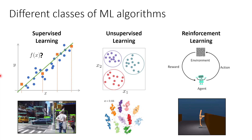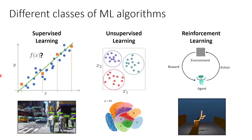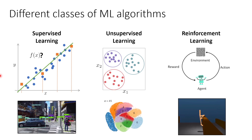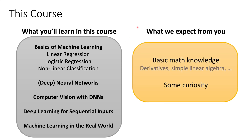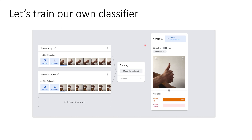While all of these classes are equally important, here we will be focusing only on supervised learning. In this course we will cover the basics of machine learning: linear regression, logistic regression, and non-linear classification, which directly leads us to neural networks and deep neural networks. After that we will look at two application areas — computer vision and sequential data — and finally how machine learning is applied in the real world with tips on where to look. What we expect from you is some basic math knowledge; if you know relatively simple linear algebra you will be fine. And of course some curiosity cannot hurt. So let's get right into it and train our first classifier.